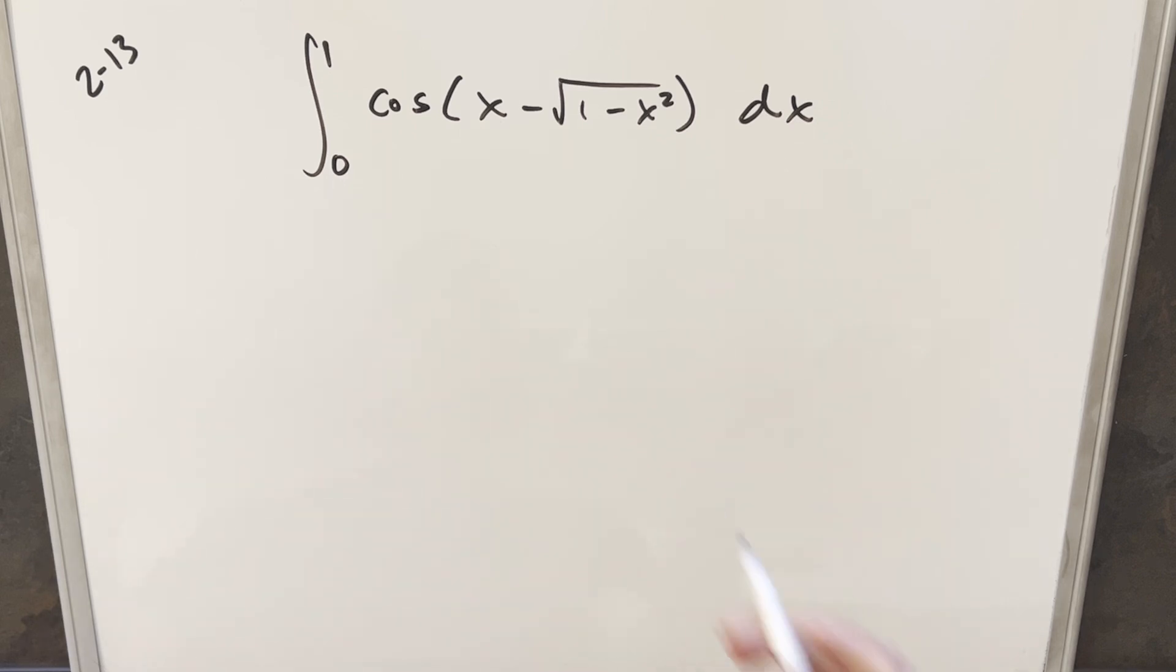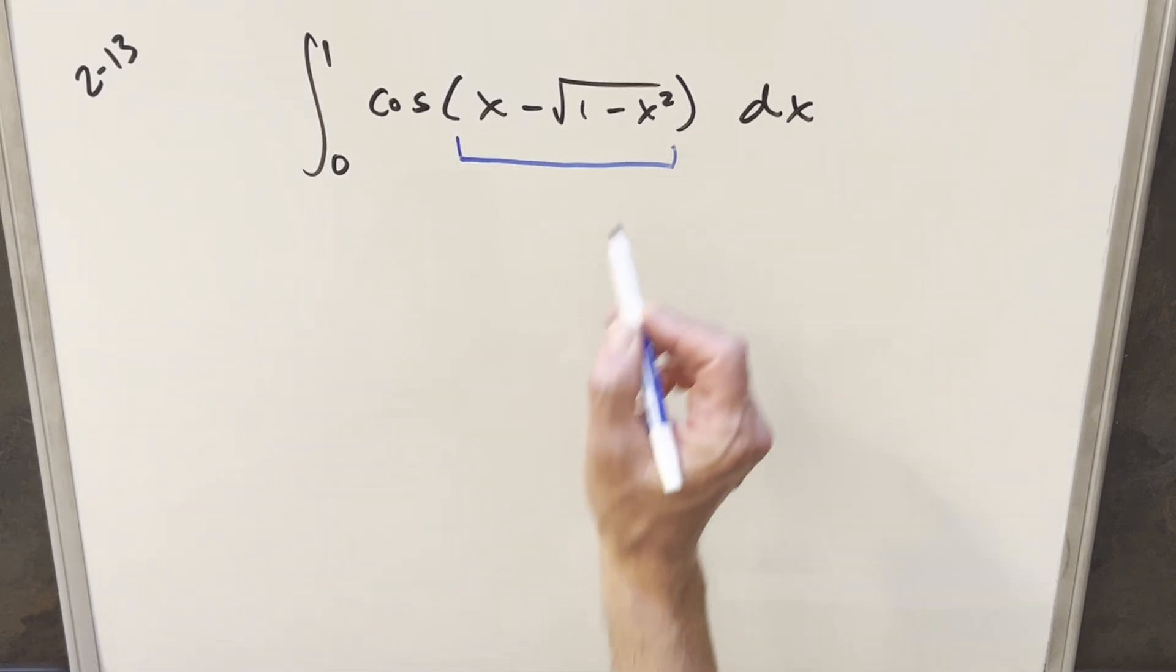Okay, this one was kind of scary at first just because we don't usually have this much stuff going on inside cosine, and in general something like this tends to be a problem.